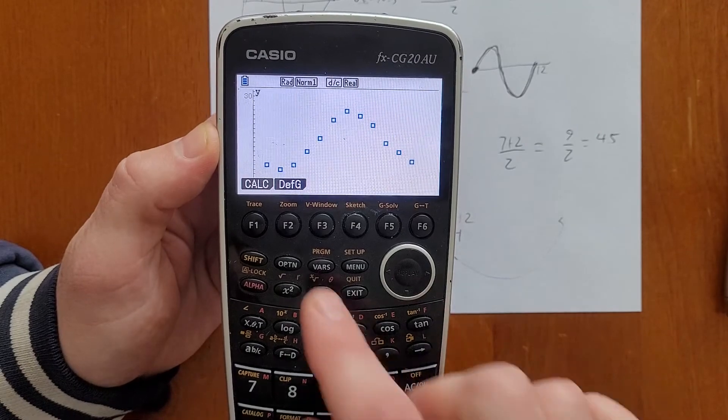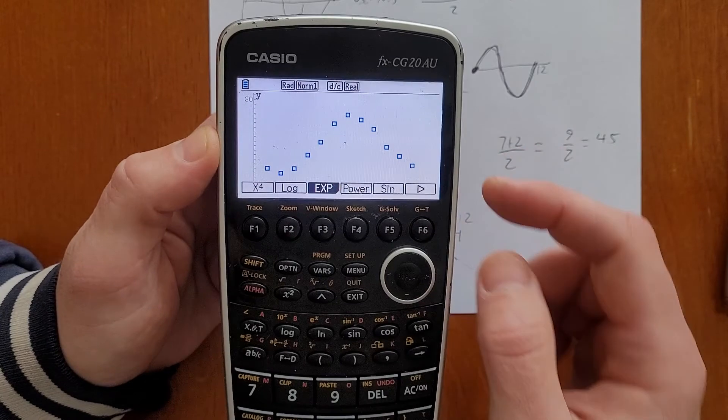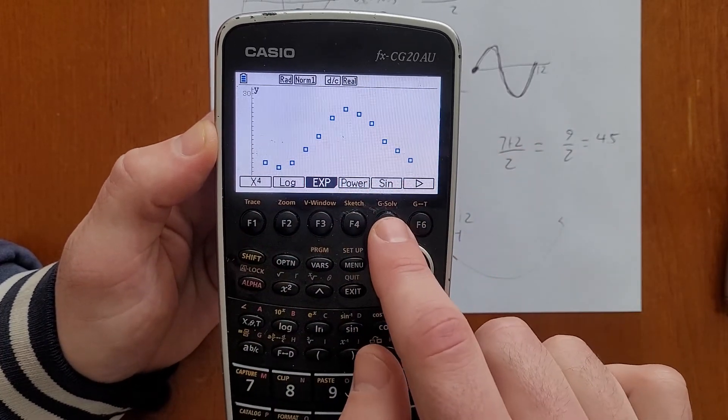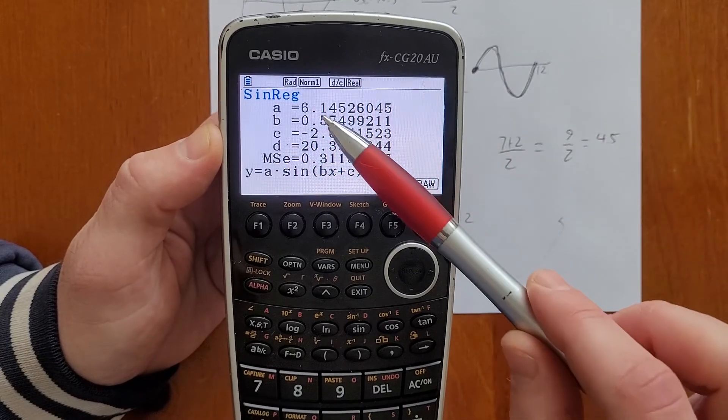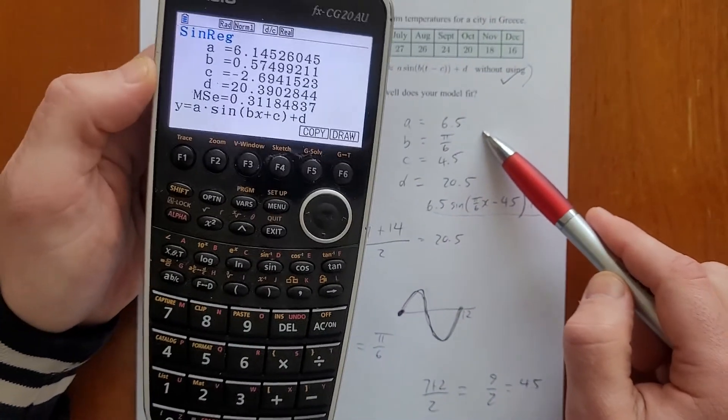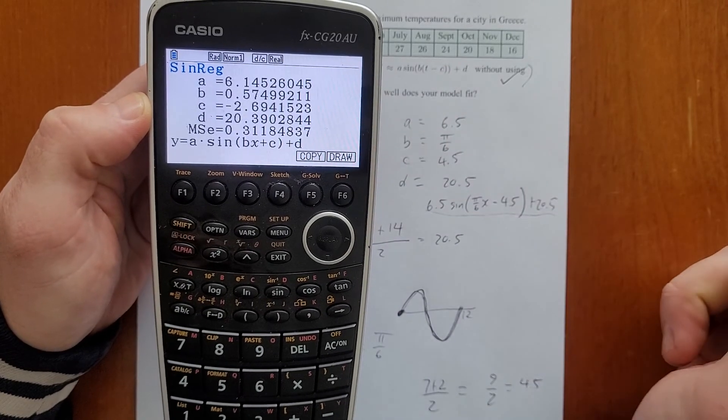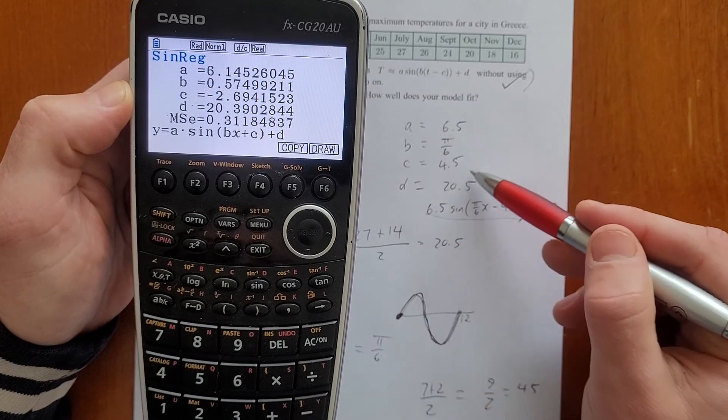And then you can see we've got that beautiful sine curve. But now watch this. We can go calc, and we can choose any model to fit it. We're interested in a sine curve. So if we press that, we've got A is 6.14. So reasonably close to our 6.5. We've got B is 0.574.